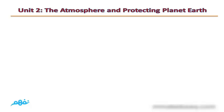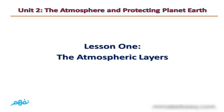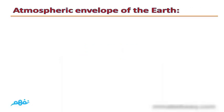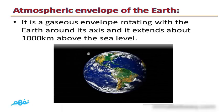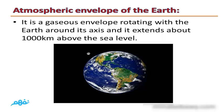Unit 2: The Atmosphere and Protecting Planet Earth, Lesson 1 — The Atmospheric Layers. The atmospheric envelope of the Earth is a gaseous envelope rotating with the Earth around its axis, and it extends about 1,000 km above sea level.